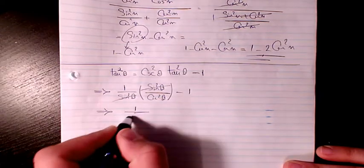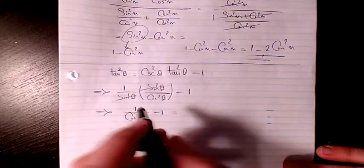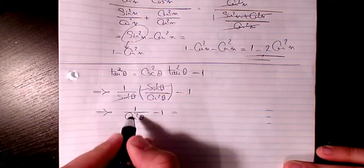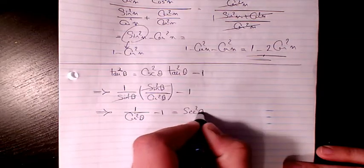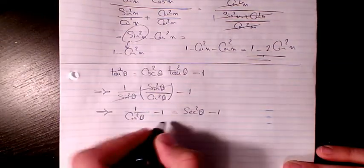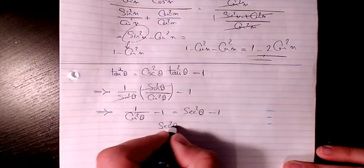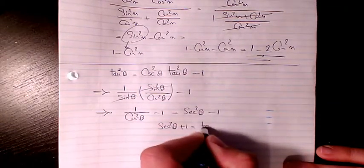I have 1 over cosine squared theta minus 1, and 1 over cosine is secant. So we have secant squared theta minus 1, and we know secant squared theta plus 1 equals to tan squared theta.